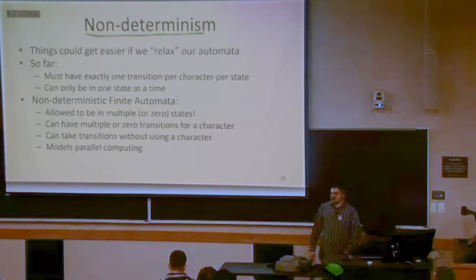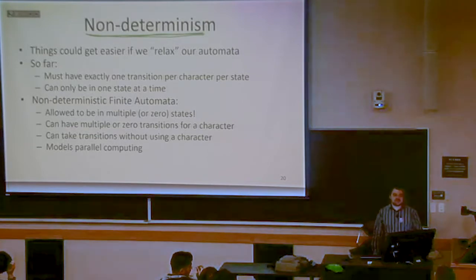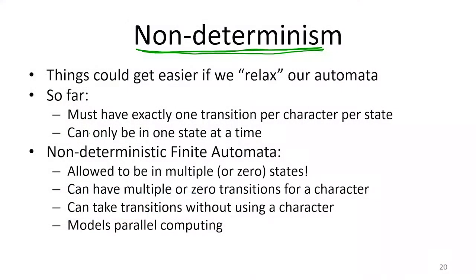When you're in some state, there's only one state that could be your next state. With non-deterministic finite state automata, we're going to say that you can actually be in multiple states at once. It turns out this is not going to be a more powerful kind of machine — everything I could do with non-deterministic finite state automata, I can do with deterministic ones as well. But they are equivalent; this just allows us a little bit more flexibility as we actually draw or write down our automata.